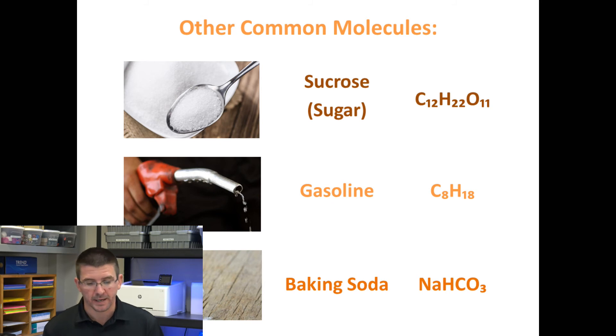Gasoline is made of carbon atoms bonded to hydrogen atoms, and baking soda contains sodium, hydrogen, carbon, and oxygen. We have the numbers in the subscript with the chemical symbol showing us how many of each type of atom there are in those individual molecules.